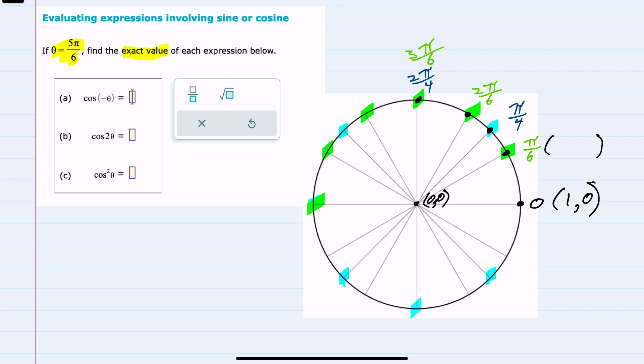And then we also have a pattern here. So 1 we can think of as the square root of 4 over 2. So moving around the circle, square root of 4 over 2, next would be the square root of 3 over 2, then the square root of 2 over 2, before the square root of 1 over 2, which is just 1 half. And then the square root of 0 over 2 is 0.